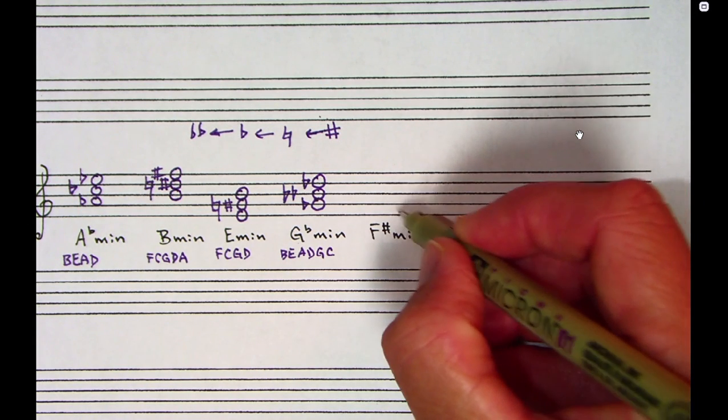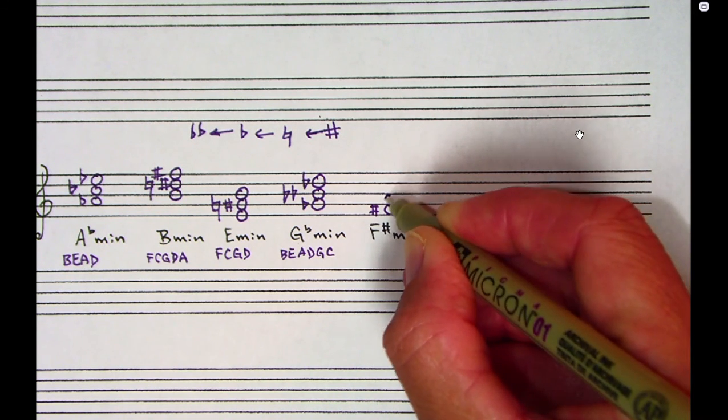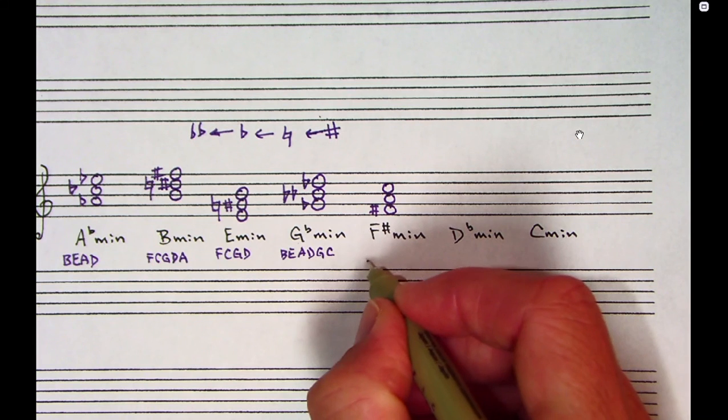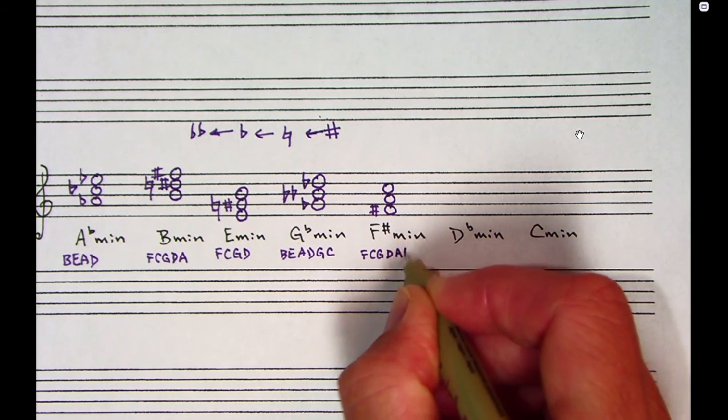Going on to F sharp minor. I'm going to think F sharp major. So F sharp is my bottom note. I'll stack my three and my five there. What's in the key of F sharp major? F, C, G, D, A, and E.